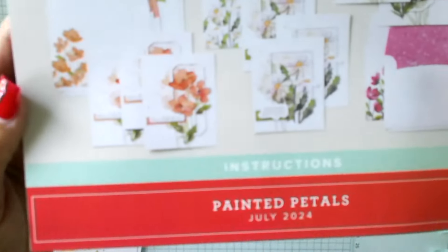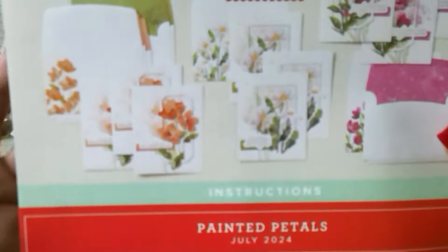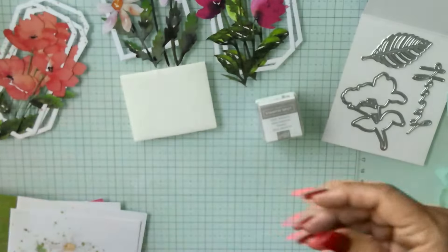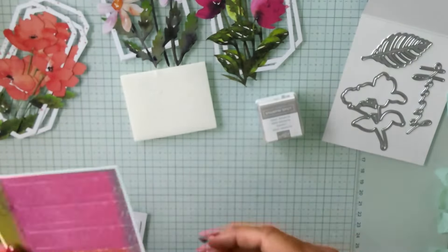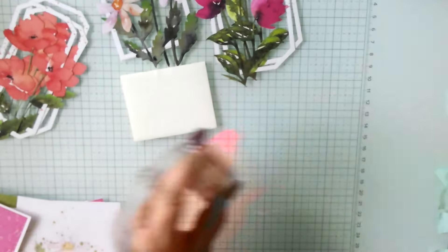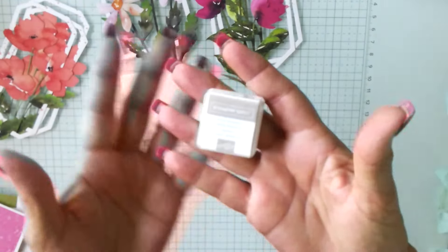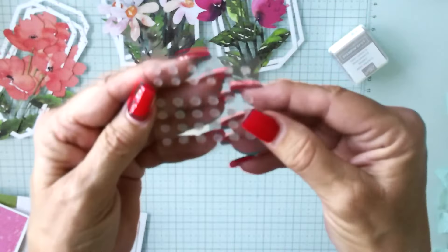The colors in this kit are Calypso Coral, Daffodil Delight, Granny Apple Green, Gray Granite, Old Olive, Mellow Mambo, Mossy Meadow, Peach Pie, and Pretty in Pink. They all go together beautifully.